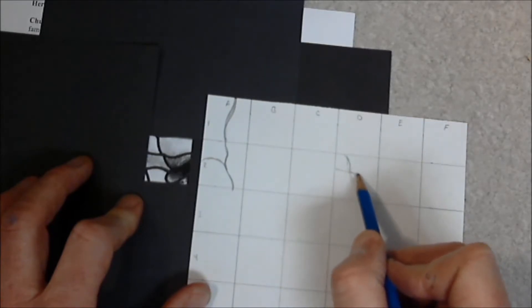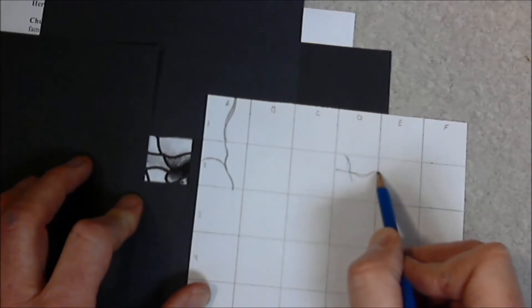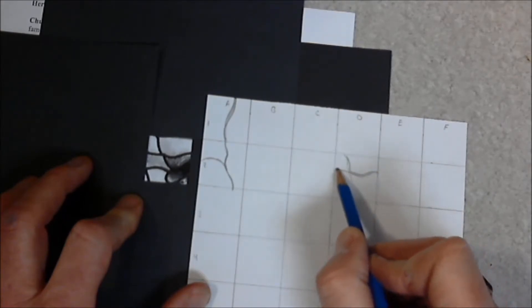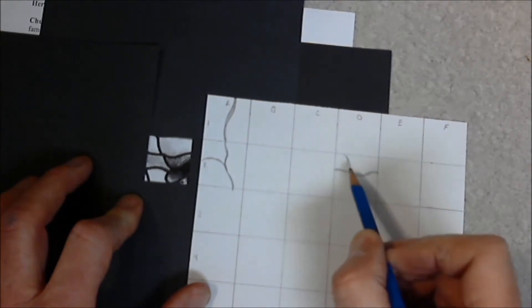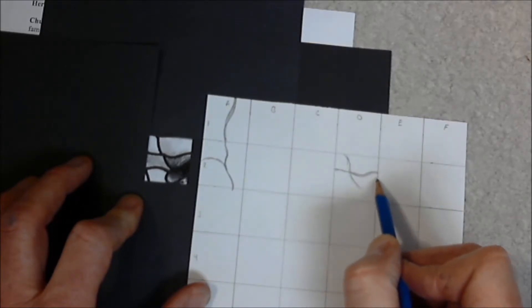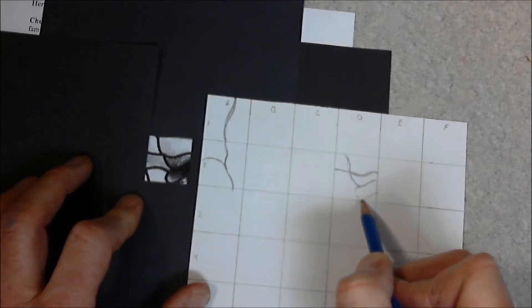Kind of dip down a little bit. And come up. I'm paying attention to where the lines come into my square. I'm paying attention to where the lines exit my square. It's a very dramatic curve here. There's this little loop that comes in about here. Dips down. Bends up.